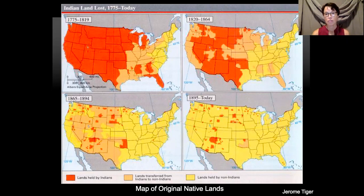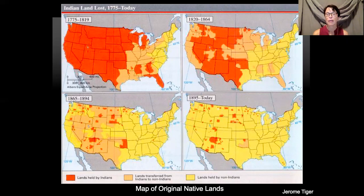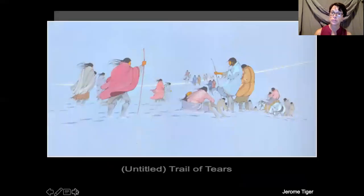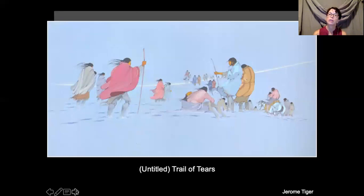He was a Native American from the Creek tribe primarily, with some relatives that were Seminole. Over 150 years ago, his relatives were forced to move from another part of the country. When you moved, you probably had all your things in a truck and drove by car. But when the Native Americans were moved, they were forced to walk and carry everything — 700 miles. We're going to learn about the Trail of Tears, that journey for these Native Americans.